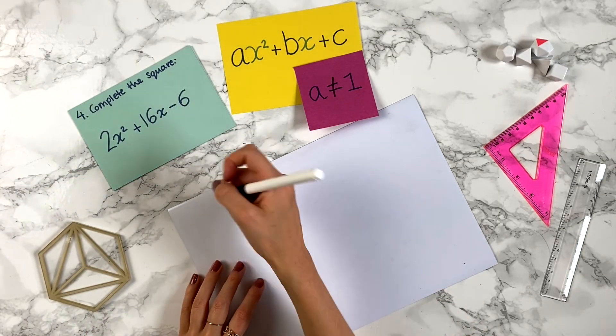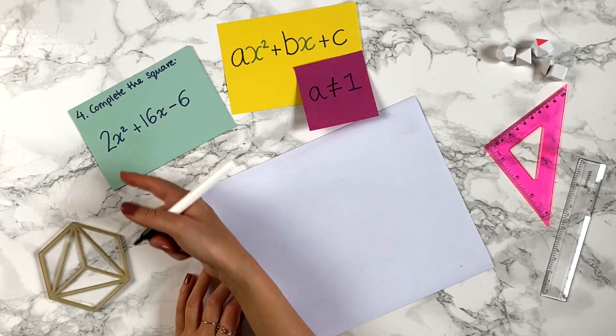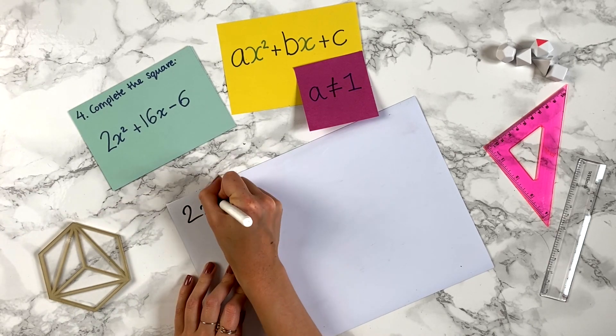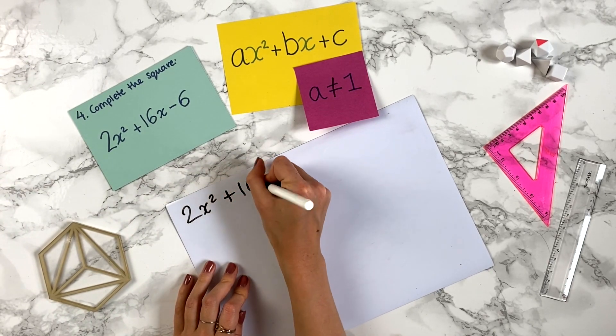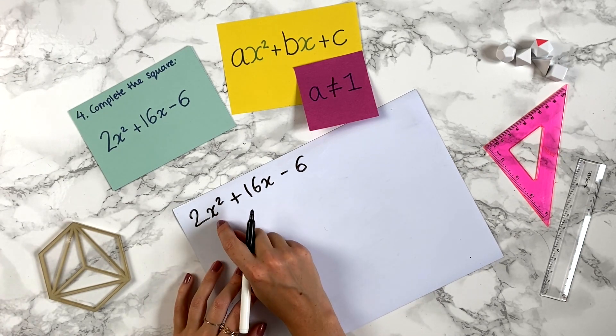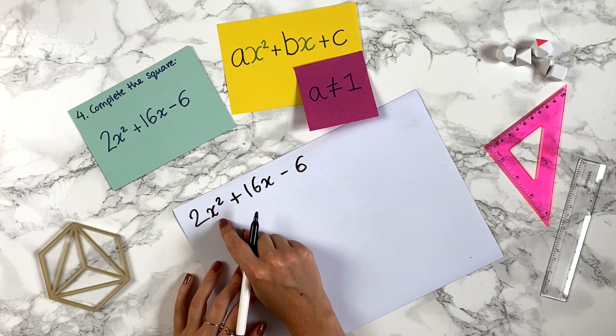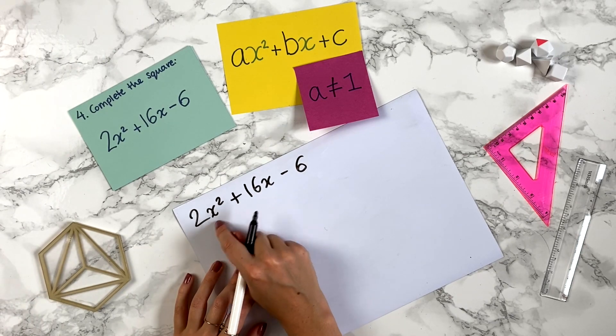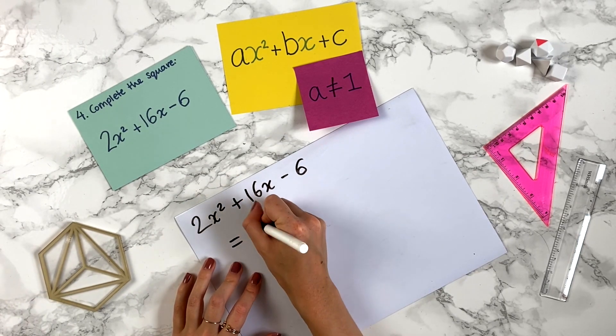Let me write out the expression that we're given here. So we're trying to complete the square for 2x squared plus 16x minus 6. What you can do is we want to make the number in front of the x squared 1. Because we've got 2x squared here we can take out the 2.